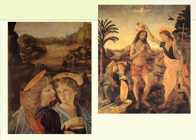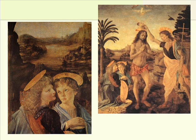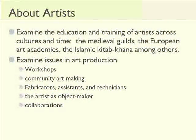Artists become artists in different ways at different times in history and in different social contexts. This is a painting by the artist Verrocchio. He had a studio with lots of apprentices working in it. Apprentices were generally young boys with talent who came to work under a master. In this case, one of the apprentices was a talented young man named Leonardo da Vinci, who painted the angel that we see on the left. That's one of the things we'll be looking at in this chapter — just how people become artists.